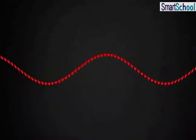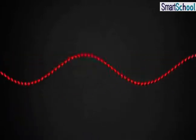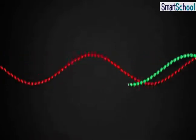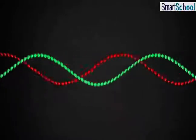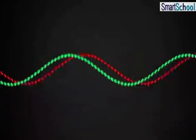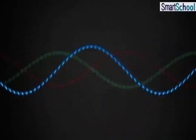A string wave going to the right will get reflected at one end, which in turn will travel and get reflected from the other end. This will go on until there is a steady wave pattern set up on the string.